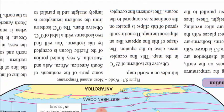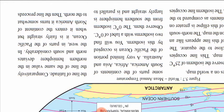You can see 0 degrees Celsius twice on the map. The 0 degree isotherm from the southern hemisphere is largely straight and parallel to the line of latitude. Comparatively, the line of the same value in the northern hemisphere divides north as well as south considerably. In the west, in the parts of the Pacific Ocean, it is fairly straight. But when entering the continent of North America, it turns somewhat to the north.